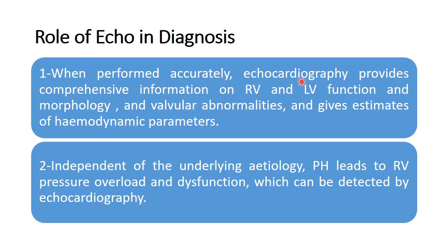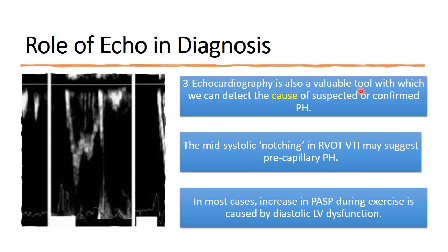When performed accurately, echocardiography provides comprehensive information on right ventricular and left ventricular function and morphology, valvular abnormalities, and it gives estimates of hemodynamic parameters. Independent of the underlying etiology, pulmonary hypertension leads to right ventricular pressure overload and dysfunction, which can be detected by echocardiography. Mid-systolic notching in the RVOT VTI may suggest pre-capillary pulmonary hypertension, and exercise-induced increase in pulmonary artery systolic pressure is mostly caused by diastolic left ventricular dysfunction.